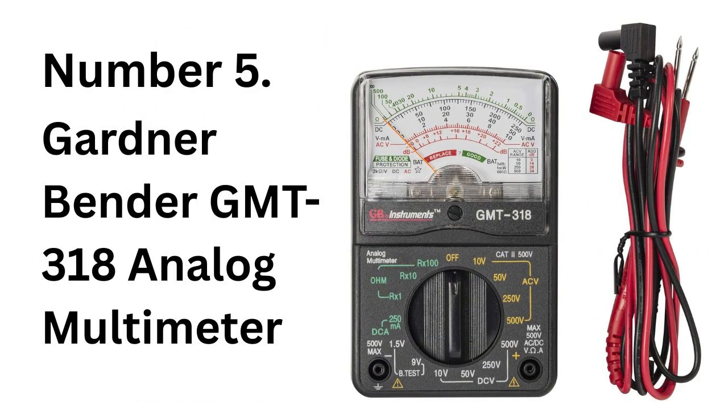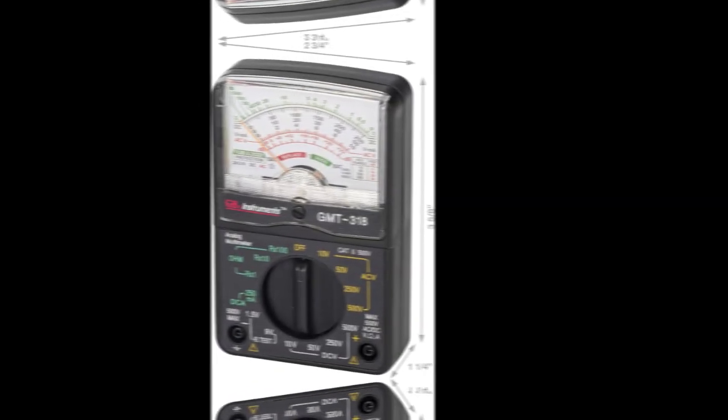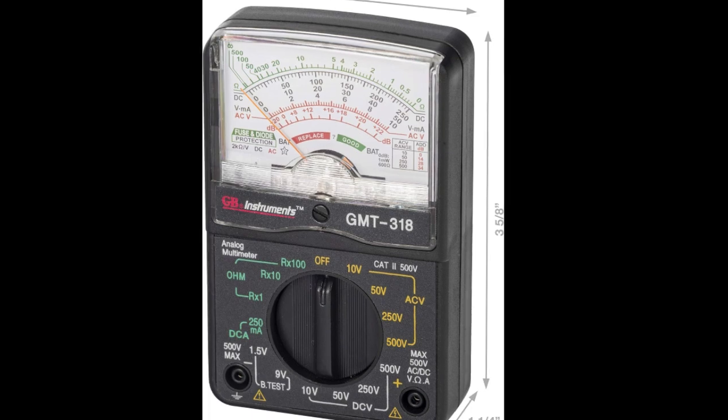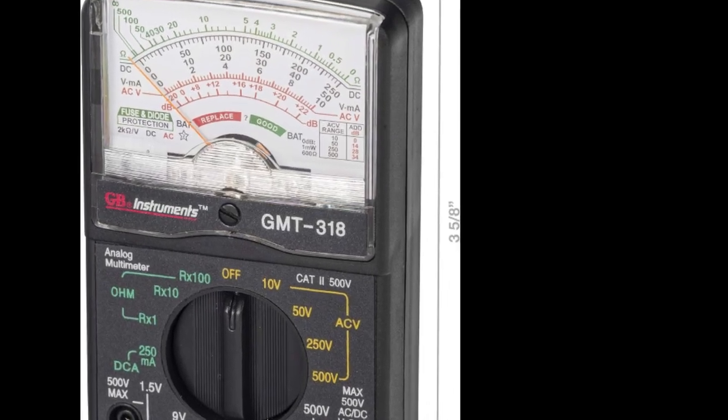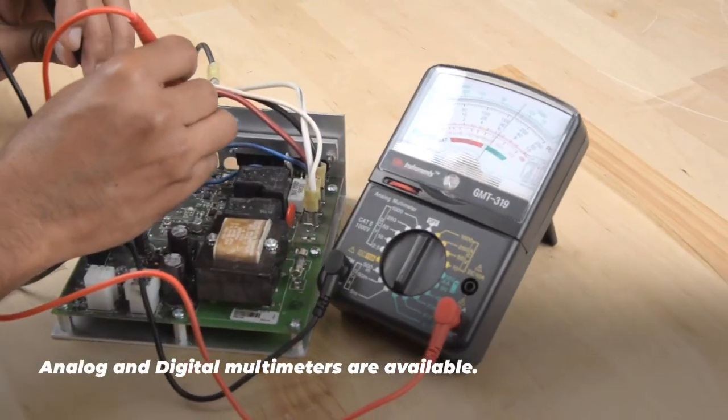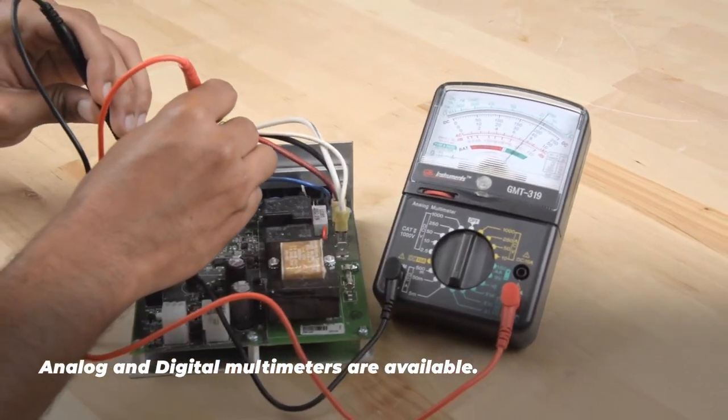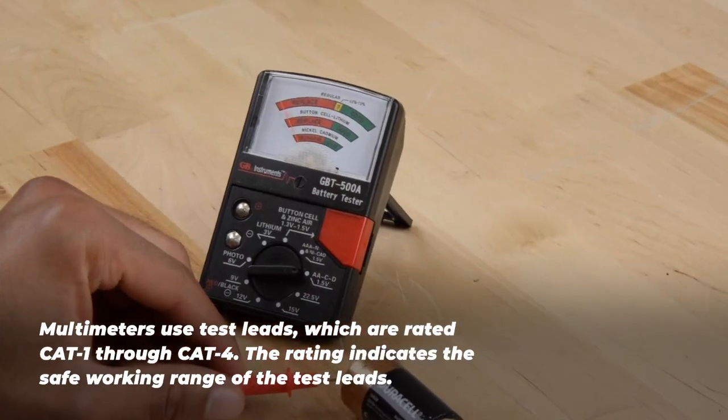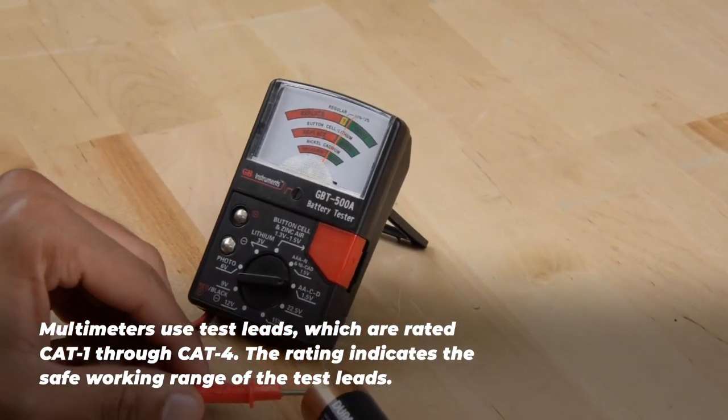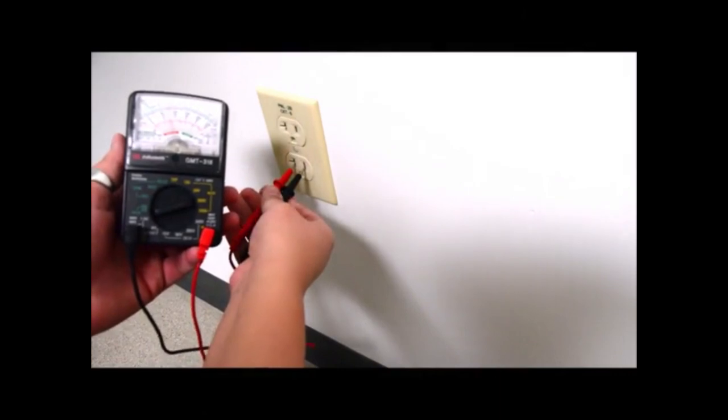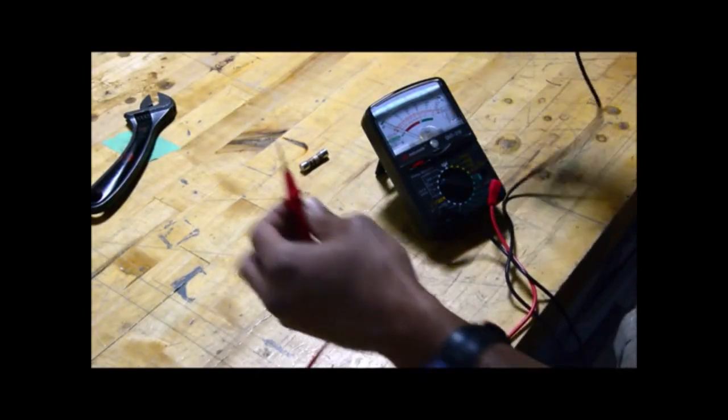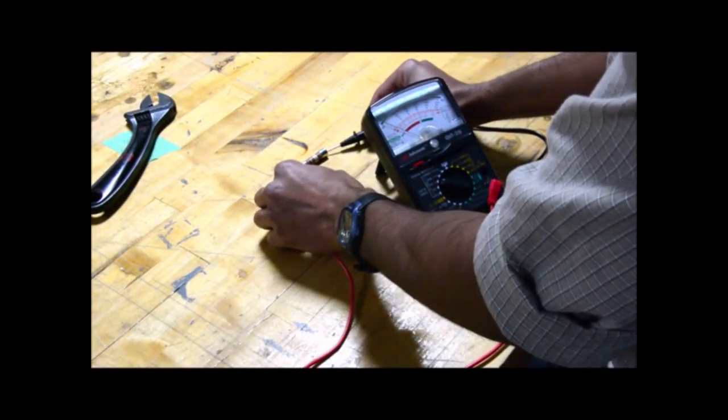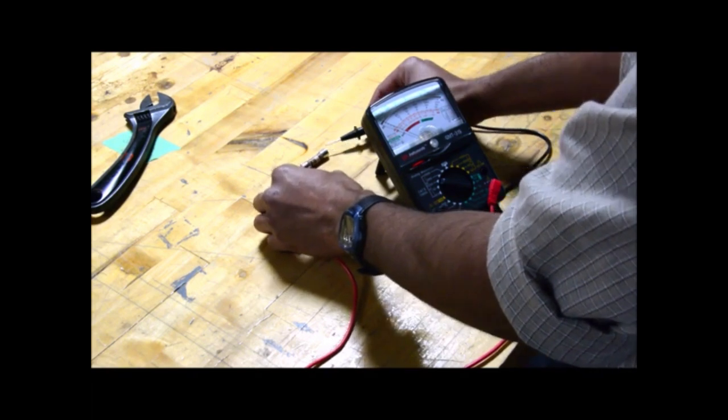Number 5. Gardner Bender GMT-318 Analog Multimeter. The Gardner Bender GMT-318 Analog Multimeter is a compact, battery-powered tool designed for basic electrical testing, featuring a 6-function, 14-range style, ideal for household and automotive applications. Weighing just 0.01 ounces and measuring 1.25 x 2.75 x 4.25 inches, this lightweight black multimeter is easy to carry and store.